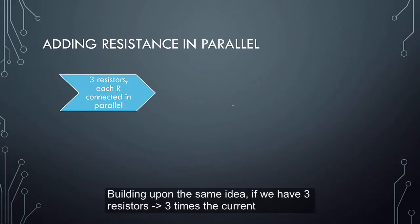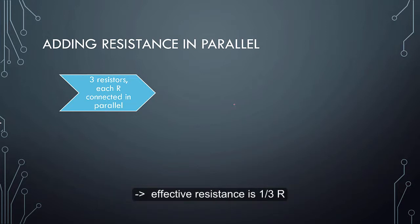Following the same idea, if we have 3 resistors, then it will be 3 times the current, and thus the effective resistance is 1 third R.